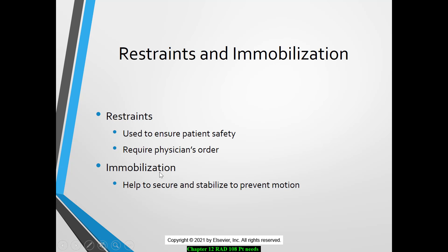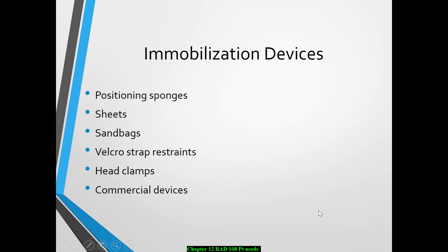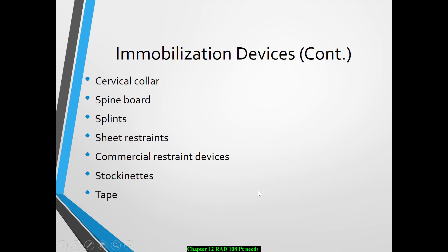If we're going to use restraints or immobilization devices, remember that a physician's order is required. They should only be used to ensure patient safety. We can use tape, positioning sponges, and sandbags to help immobilize, but make sure you're communicating with your patients so they know why you're immobilizing them — they know it's temporary. Try to use the shortest possible exposure time and immobilization aids when possible, and empathize with what they're going through. Examples of immobilization devices include positioning sponges, sheets, sandbags, Velcro straps, head clamps, cervical collars, spine boards, and splints.